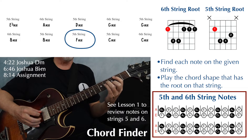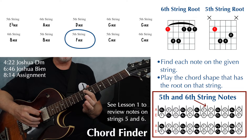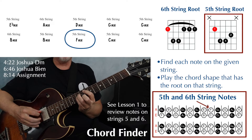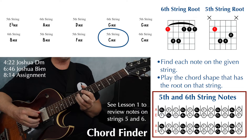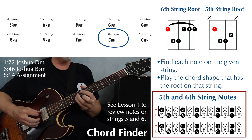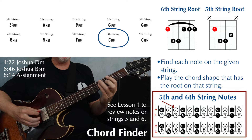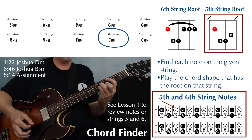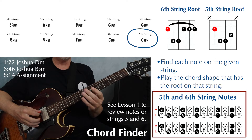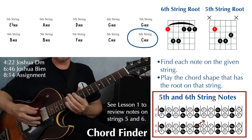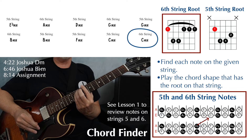Next we have F minor also on the fifth string. We need to find our F on the fifth string — that's going to be at the eighth fret — and then you play that fifth string minor shape. Our last two chords are both C minors. The first one is C minor on the fifth string — find your C on the fifth string and play that fifth string minor shape. Our last one is C minor on the sixth string — your C on the sixth string is at the eighth fret, and then you play your sixth string minor shape.